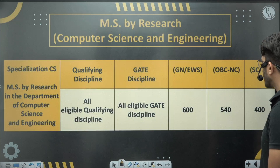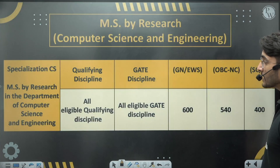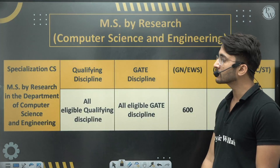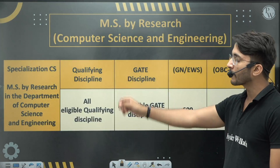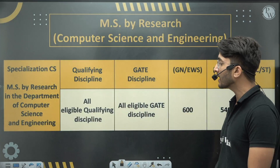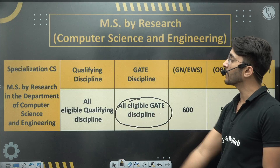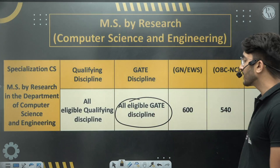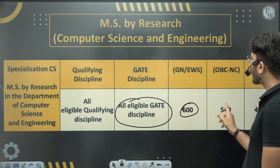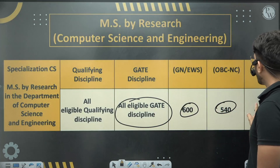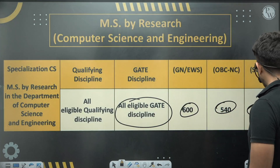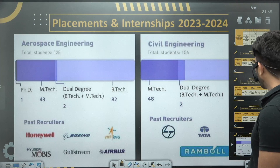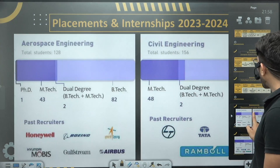You can also join MS by Research in the Department of Computer Science and Engineering at IIT Bombay. All eligible GATE disciplines can apply, and the minimum GATE scores required are mentioned in the PDF.